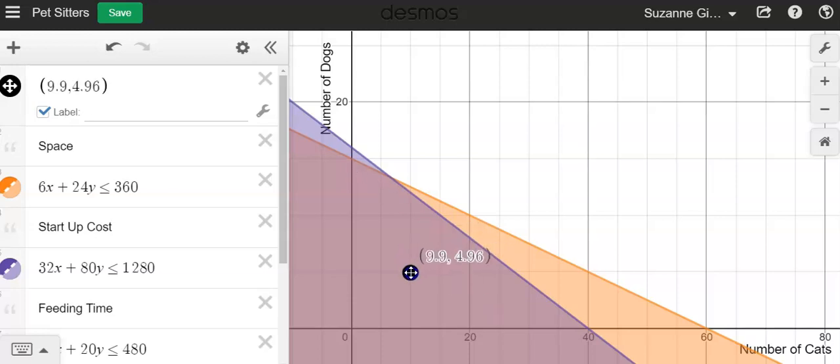So for example, that's about 10 cats and five dogs. That would be an okay number of cats and dogs because they have enough space because it's in the orange shaded region. And they have enough money because it's in the blue shaded region and it is in this double shaded region. So any of these amounts.